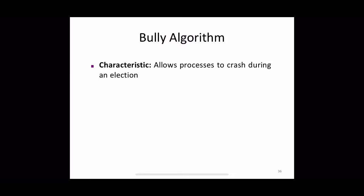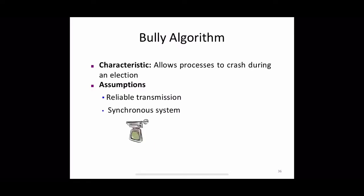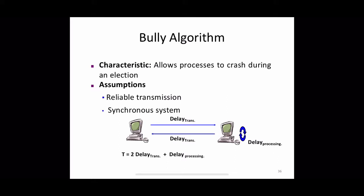The bully algorithm allows processes to crash during an election and assumes that communication is always reliable — that is, if a process sends a message, it will be delivered at the receiver unless the receiver has crashed. No other failure occurs in the system. Also, the system is always synchronous, meaning there is a strict time bound for any type of activity. Since the system is synchronous, we can easily detect whether a process has crashed using a reliable failure detector.